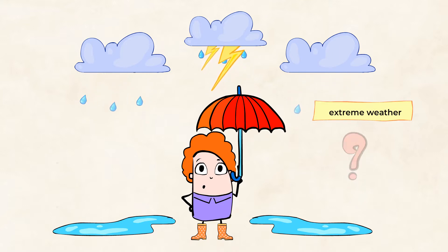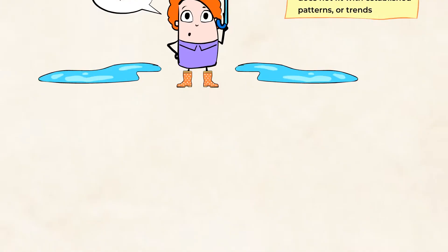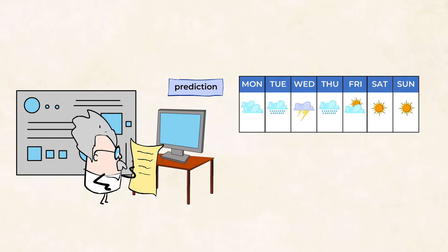Extreme weather is the kind of weather that does not fit with established patterns or trends. In other words, extreme weather is unexpected. Sometimes we can predict using patterns where and when different types of extreme weather occurred in the past, and sometimes it happens unexpectedly.